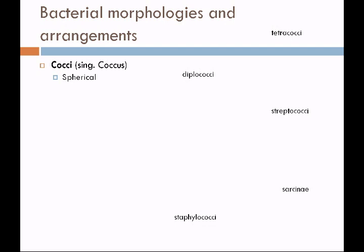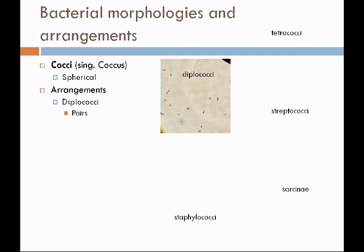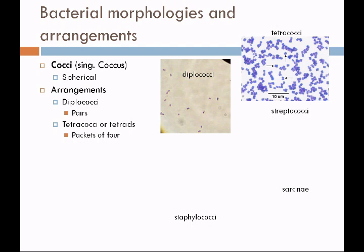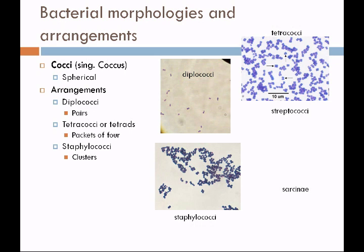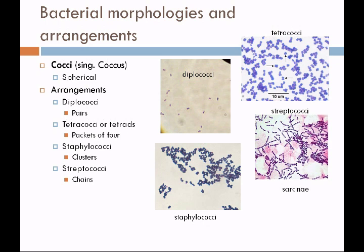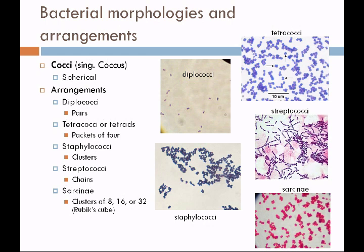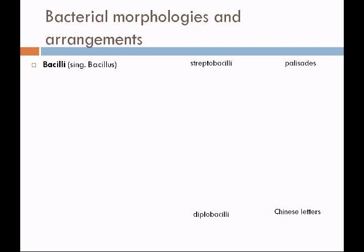The morphologies and arrangements you are going to see in lab include the cocci. Cocci are spherical-shaped organisms that come in several different arrangements: cocci in pairs are referred to as diplococci; in packets of four, we call them tetracocci or tetrads; in clusters, we call them staphylococci — the prefix staph means berries; in chains, we call them streptococci; and in clusters of eight, sixteen, or thirty-two, somewhat like a Rubik's Cube, we call them sarsinae. Cocci are all spherical, but sometimes they'll have a jelly bean shape or a triangular arrowhead shape. The singular for cocci is pronounced coccus.